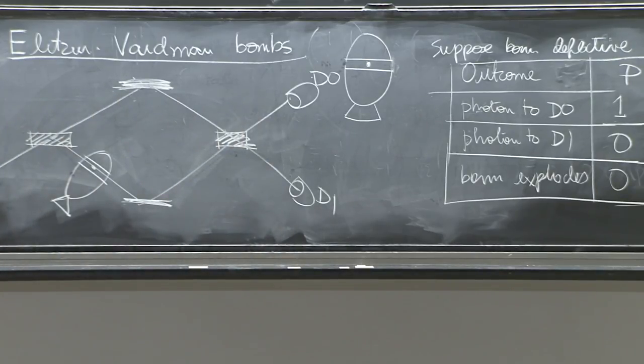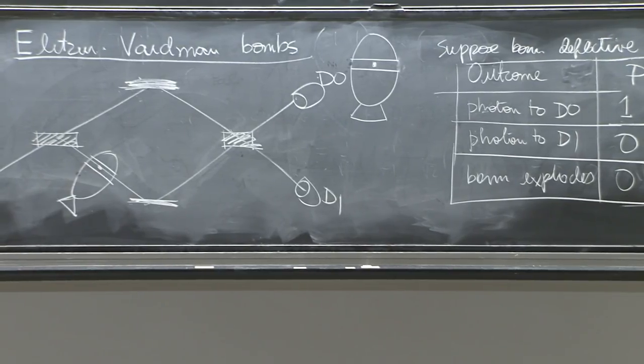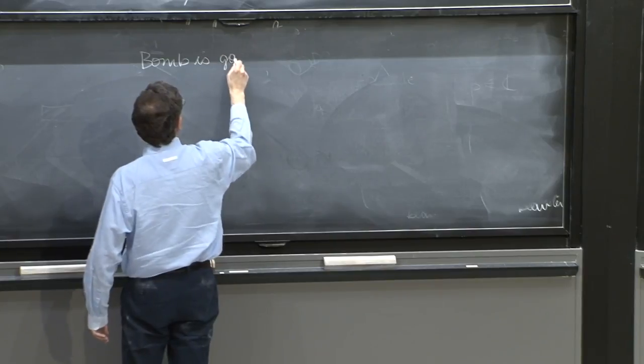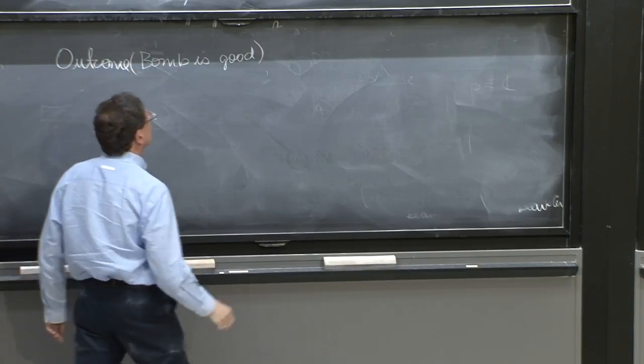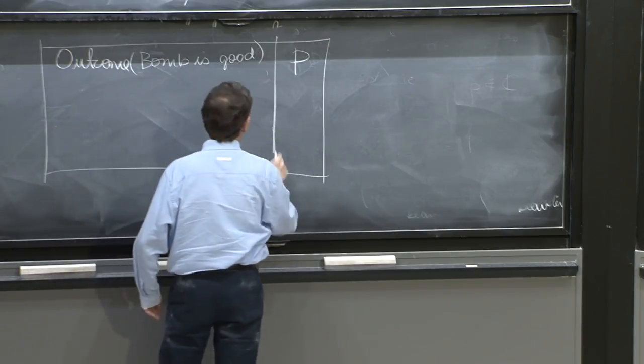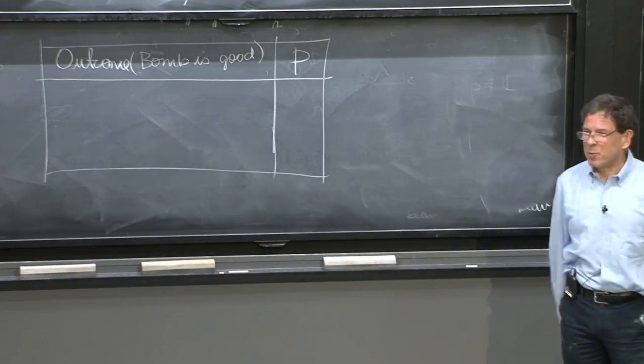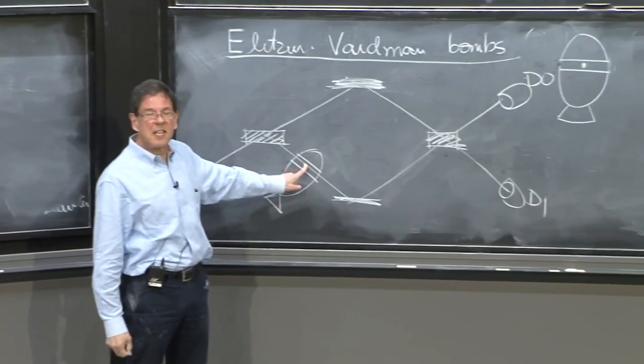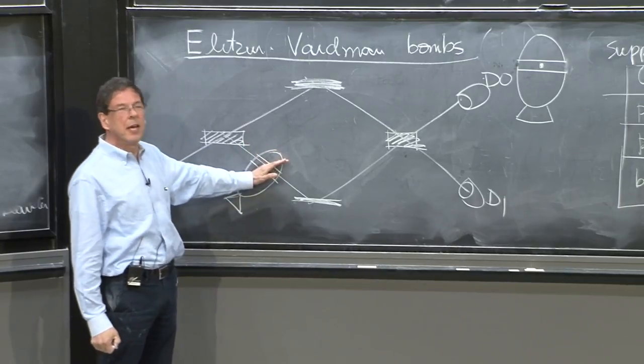On the other hand, suppose the bomb is good. Bomb is good. It's good. And then what are the outcomes? And what are the probabilities? Well, you know more or less what's happening already. The bomb is good means there is a detector that never fails to detect the photon. And if a photon comes in, it will capture it. It will block it. The bomb will explode.